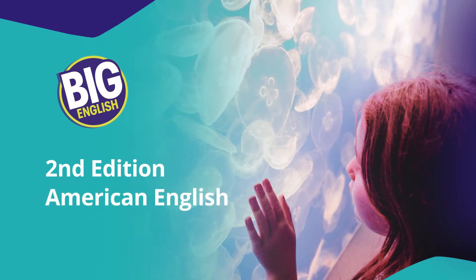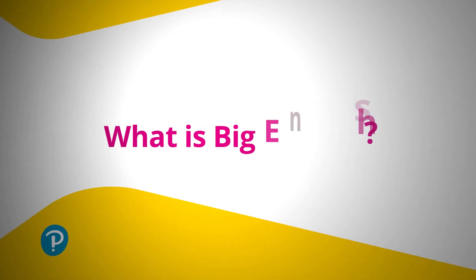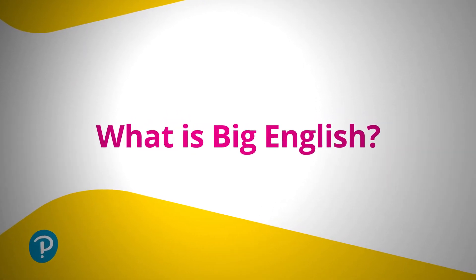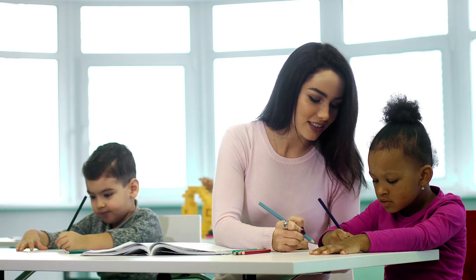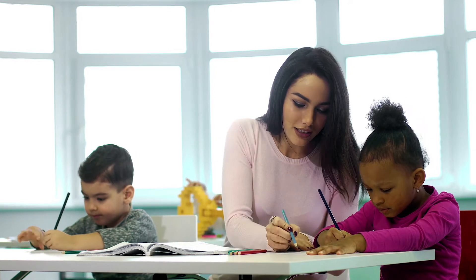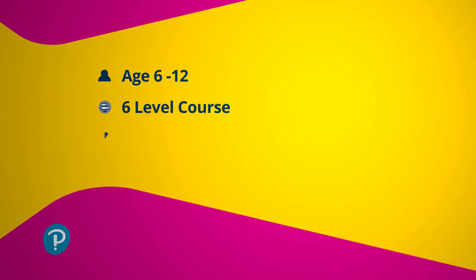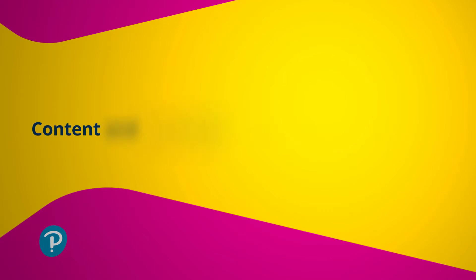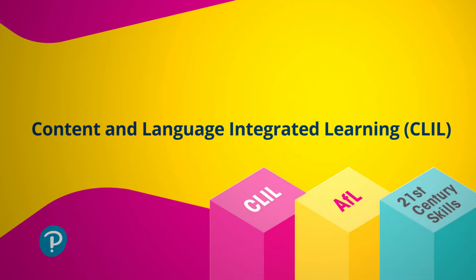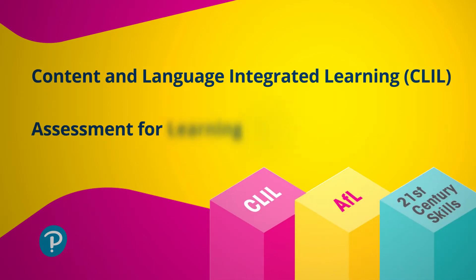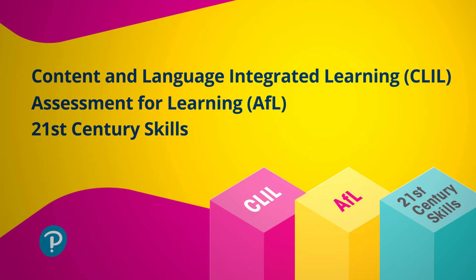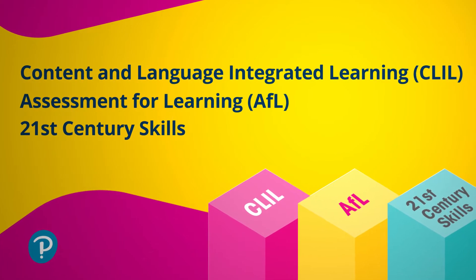We're delighted to announce the launch of Big English Core American 2nd Edition. We've created this video to provide you information and guidance on how to use the course. Big English is an intensive course for primary students aged 6 to 12. It's a 6-level course and has three educational pillars at its core: Content and Language Integrated Learning, Assessment for Learning, and 21st Century Skills with a particular focus on critical thinking.